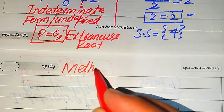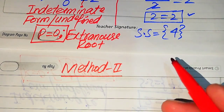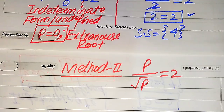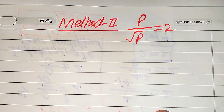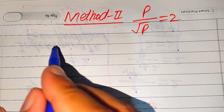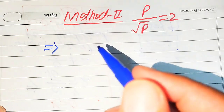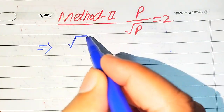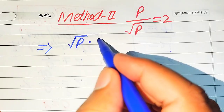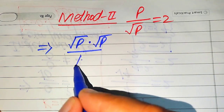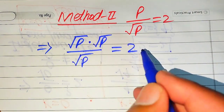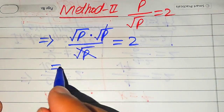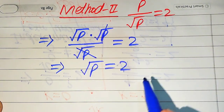For the second method, the given equation is p divided by square root of p equals 2. Here I give you a smarter technique to find the values of p. We rewrite p as square root of p multiplied by square root of p, so the numerator becomes square root of p times square root of p, divided by square root of p. The square root of p cancels out, leaving square root of p equals 2.